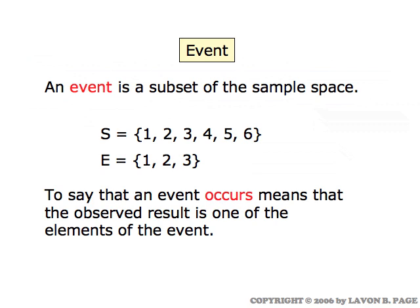The word event is used in a special way mathematically when we're talking about probability. An event simply refers to a subset of the sample space — that is, some set of outcomes corresponding to the set of all possible outcomes, which is the sample space.